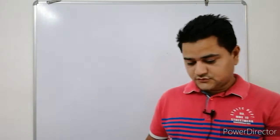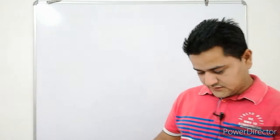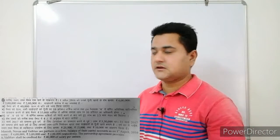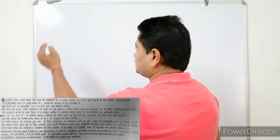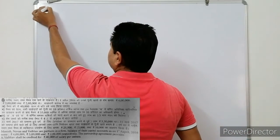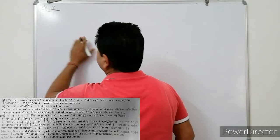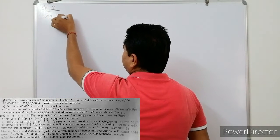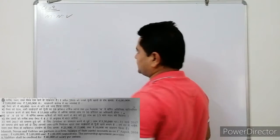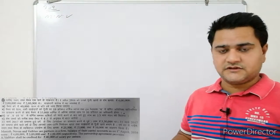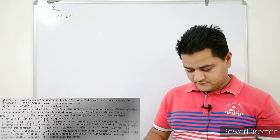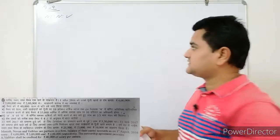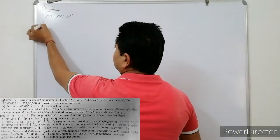Let's talk about question number 9, Chapter 1 - Partnership. The question is: Manish, Navan and Weibo are partners. The balance of their capital as on 1st April 2016 is given.